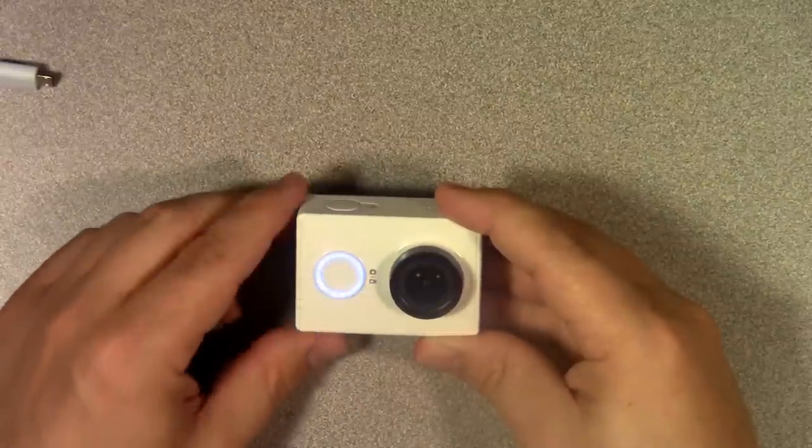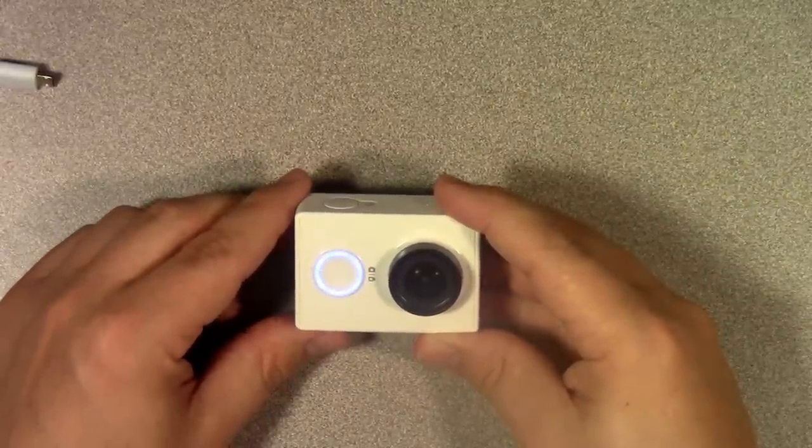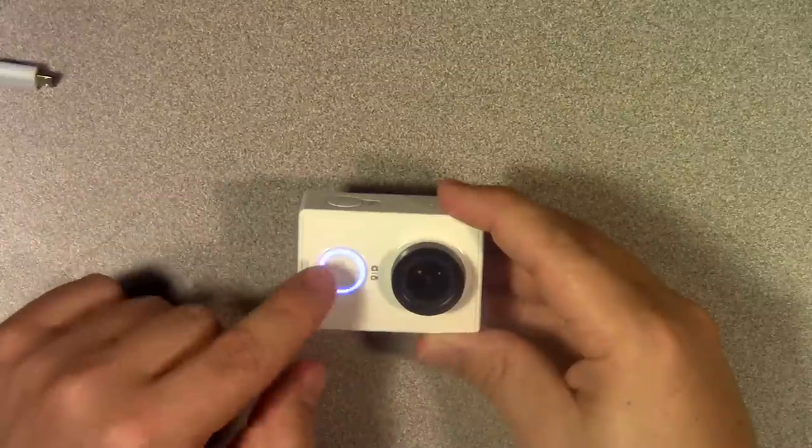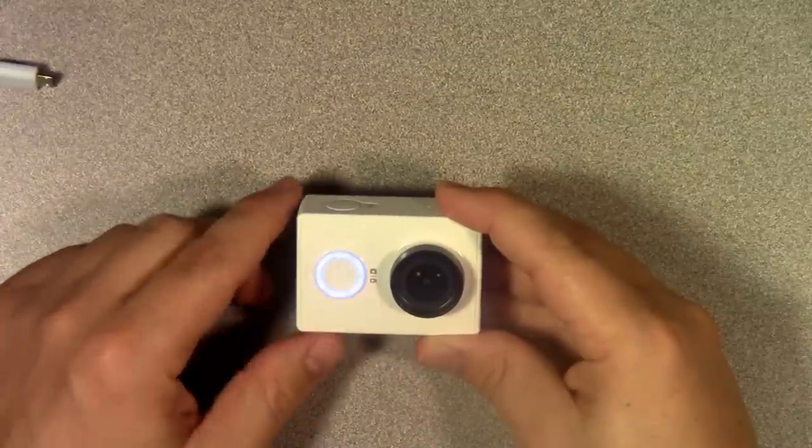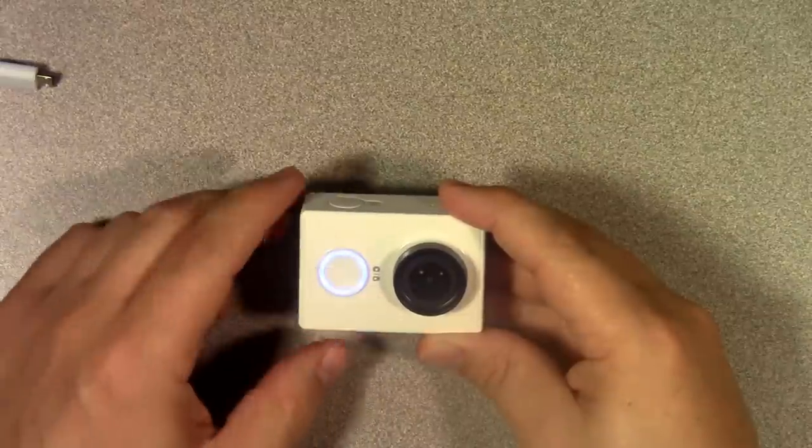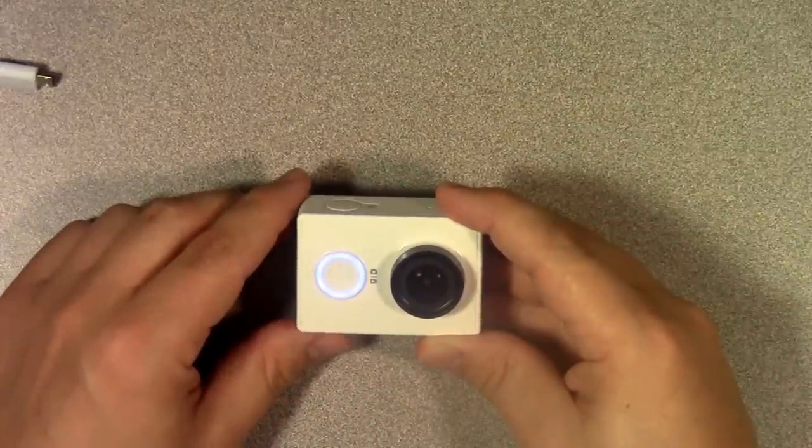Now this blue ring indicates that the battery is greater than 50% charged. If it is less than 50%, it will be kind of a pinkish, purplish color. And if it's below 15%, it will then change to an orange or red color which means the battery is nearly depleted.